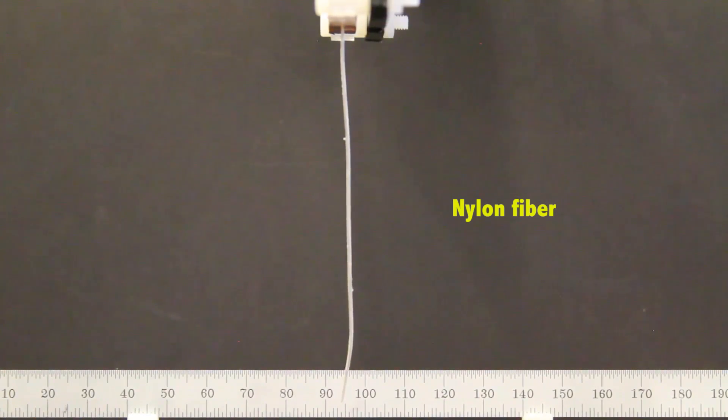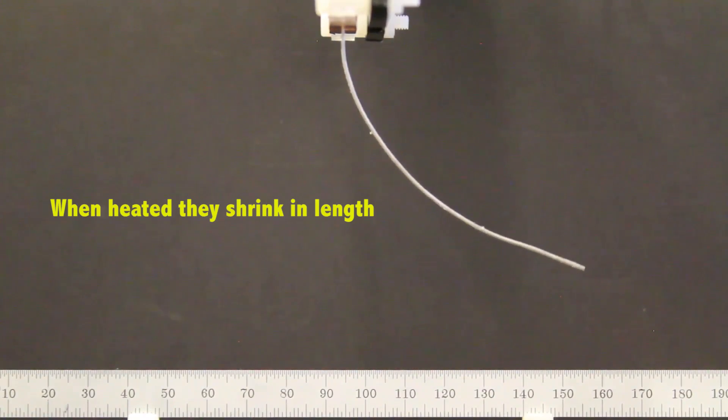It turns out, some polymer fiber materials, including a special type of nylon, have an unusual property. When heated, they shrink in length, but expand in diameter.